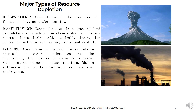Emission occurs when human or natural forces release chemicals or other substances into the environment. Many natural processes cause emissions — for example, when a volcano erupts, it releases acid, ash, and many toxic gases. These emissions can be in air, liquid, or solid format, contributing to air pollution and degrading air quality.